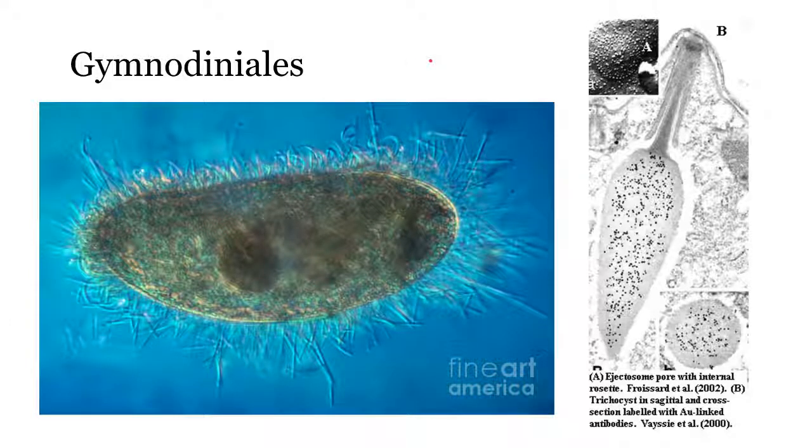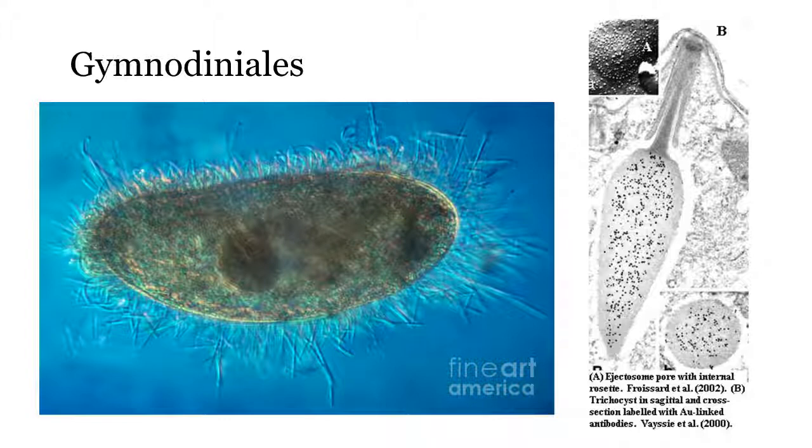Gymnodyniales include two athecate families of dinoflagellates: the Vornoeaceae, the members of which are called vornoeids, and the Polycricaceae, the members of which are called polycricoids.